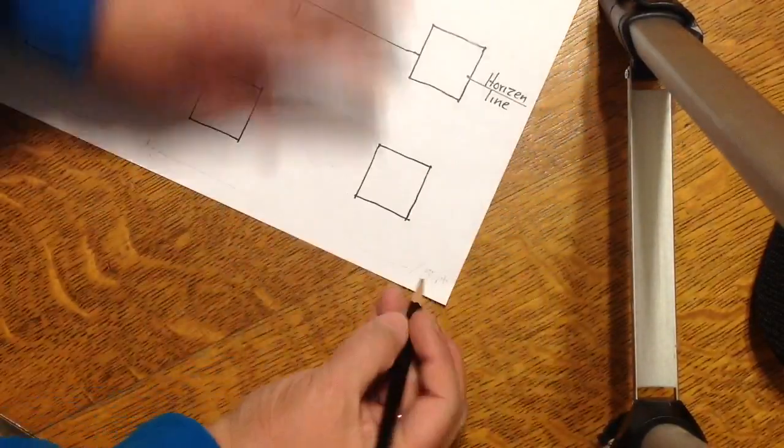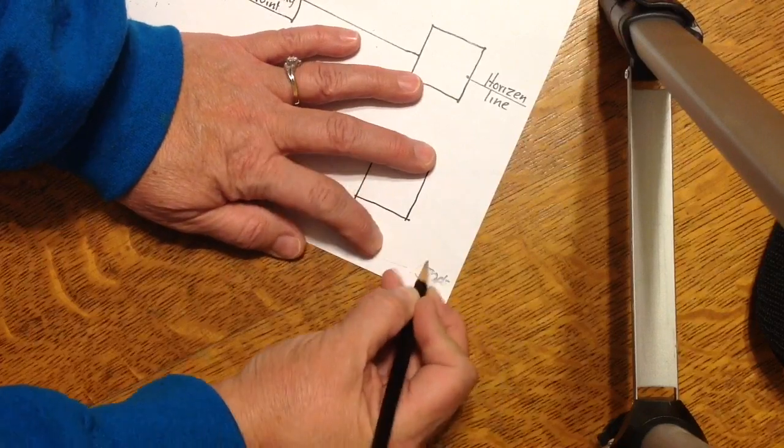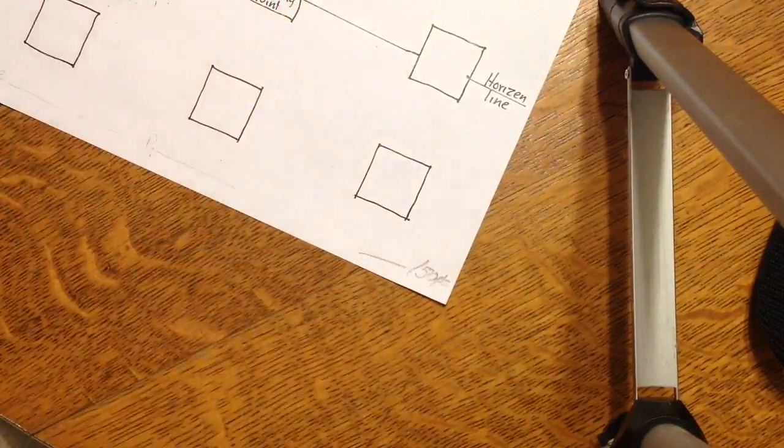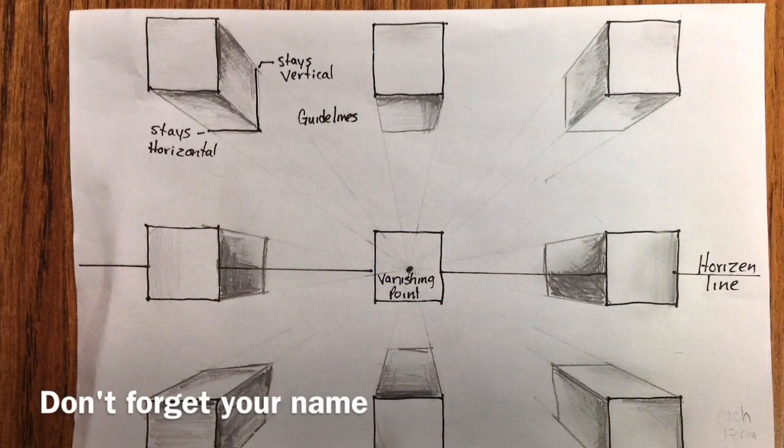This is going to be worth 50 points. Each form is worth five, and then there's ten points for neatness and cleaning up any edges. This is what your paper should look like.